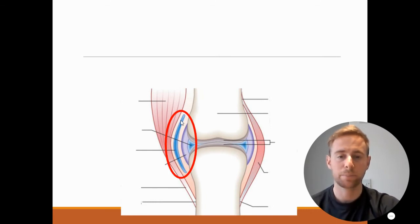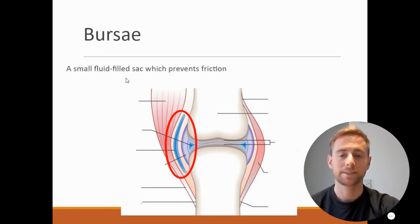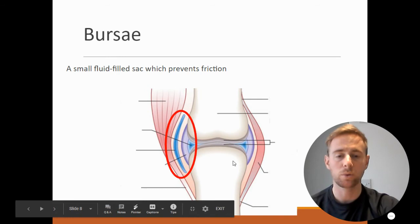Next we have this blue fluid-filled sac here. That is called the bursa, and this is a fluid-filled sac which again prevents friction. So a lot of the role of these structures within a synovial joint is to prevent friction.